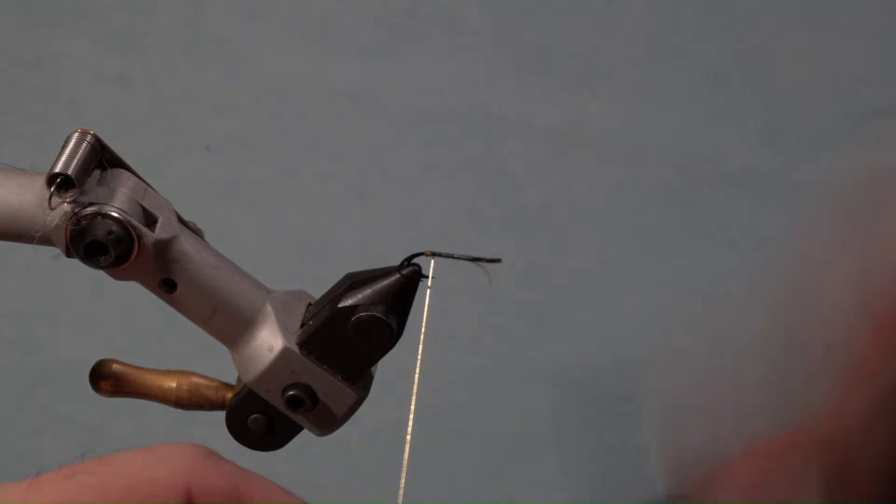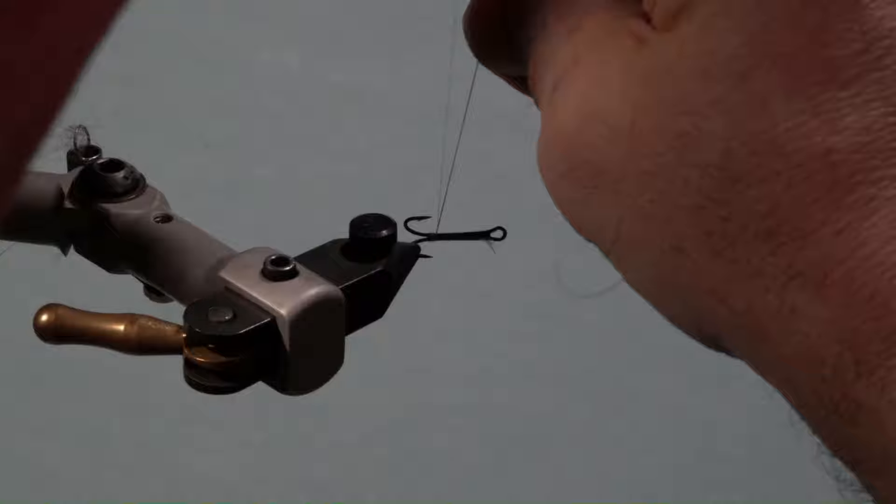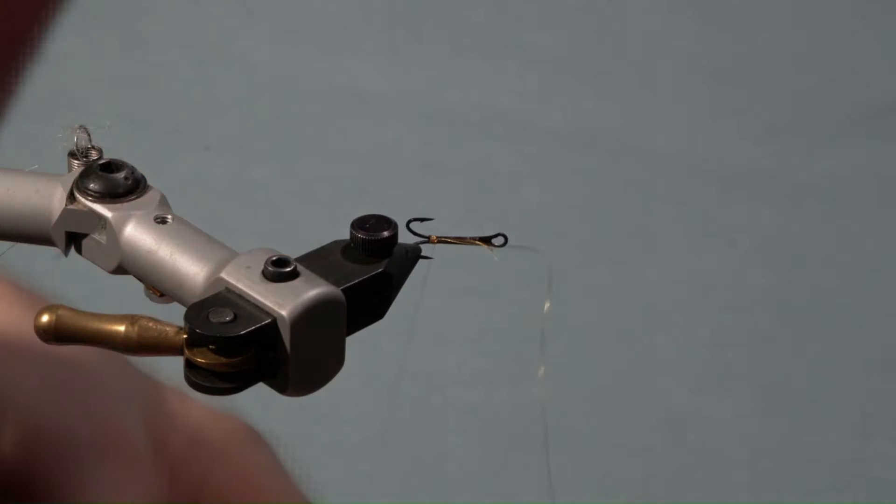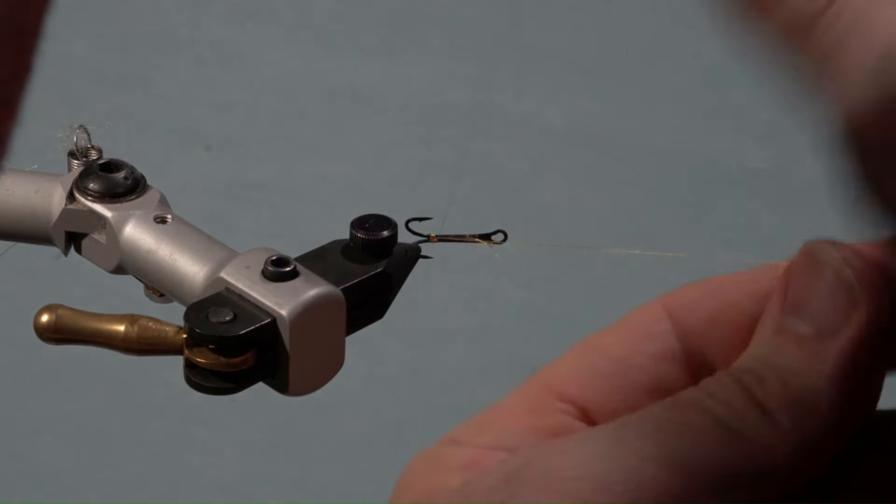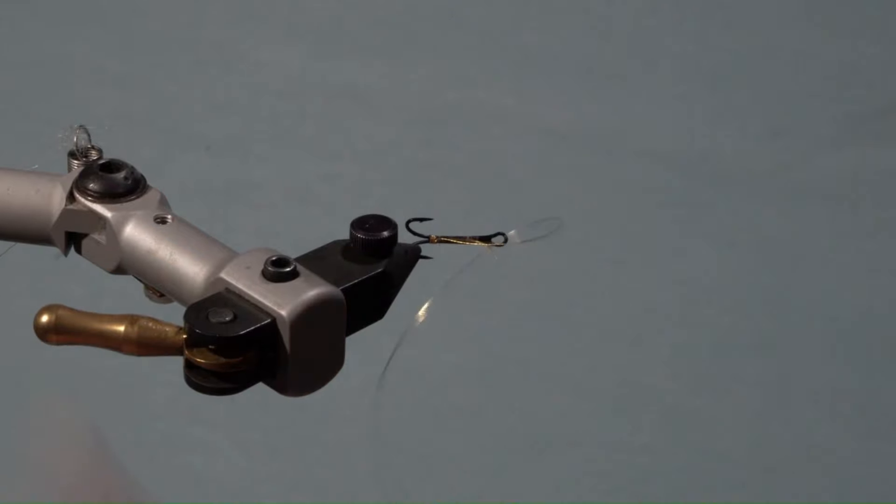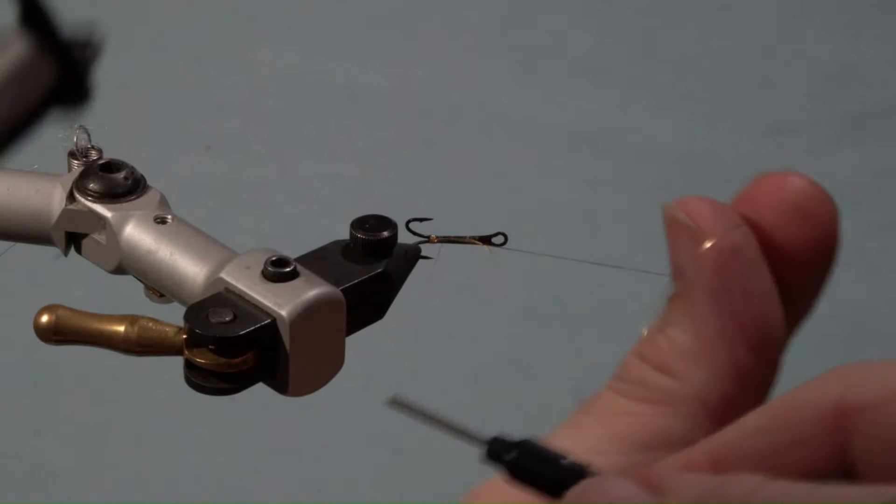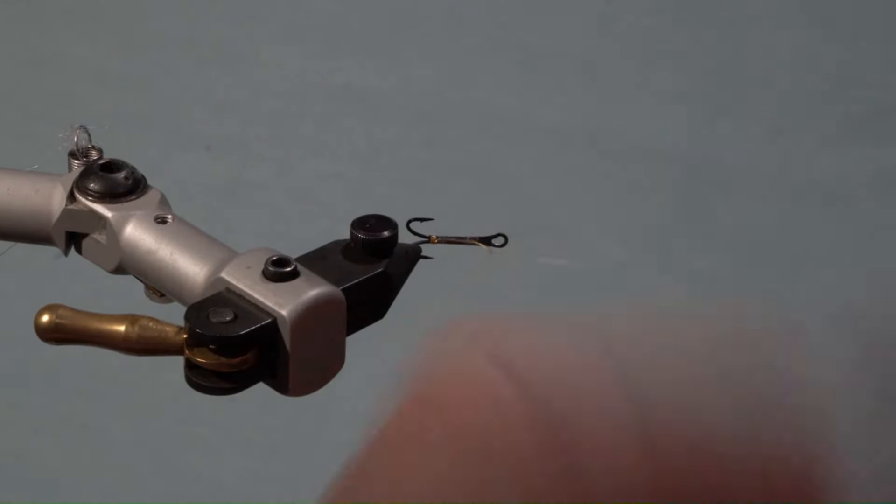I find it easier to rotate the vise while keeping tension on the tinsel. Next, unwind the thread until it meets the tinsel and secure it from underneath the hook along the whole threaded area and trim the excess at the start of the threaded area.